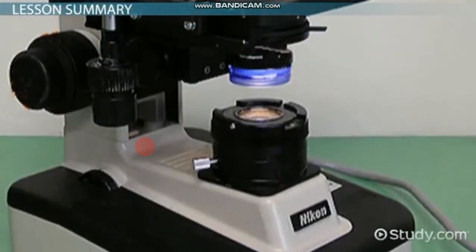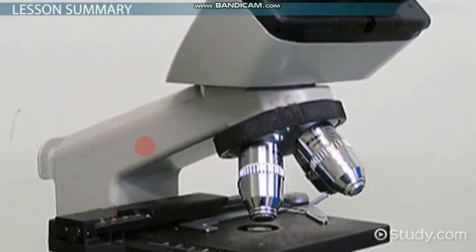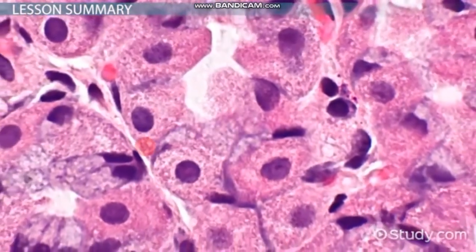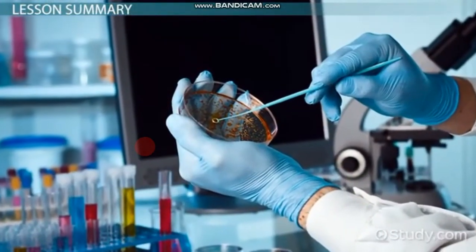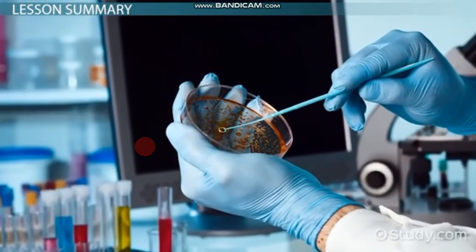Light microscopes work by transmitting light through a very small or very thin object and magnifying the image that is created with a series of lenses. Light microscopes are widely used in a variety of applications, especially in the field of biology.